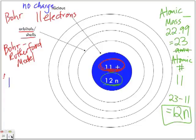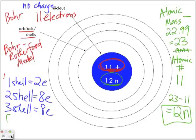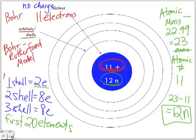In the first shell, no more than 2 electrons. In the second shell, no more than 8. The third shell holds 8 electrons as well. We are going to draw these diagrams only for the first 20 elements. You must fill all inner shells first before moving to the next — first shell filled before moving to shell 2, and shells 1 and 2 filled before moving to shell 3.